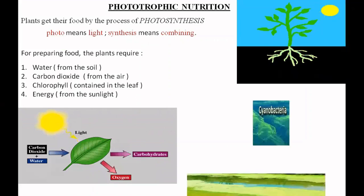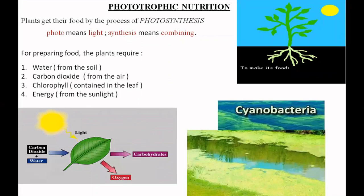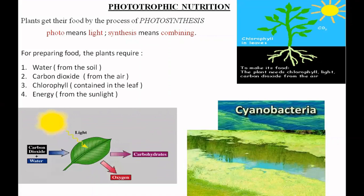Along with plants, there are certain bacteria which fall in the category of phototrophic nutrition. We have cyanobacteria, often known as blue-green algae. This blue-green algae is mostly found in the oceans and fresh water, and it is very similar to green plants because it can use energy from sunlight to make its own food through the process of photosynthesis.